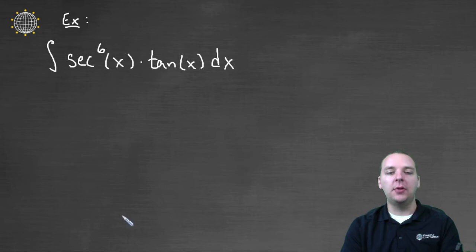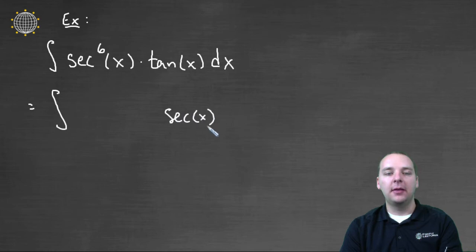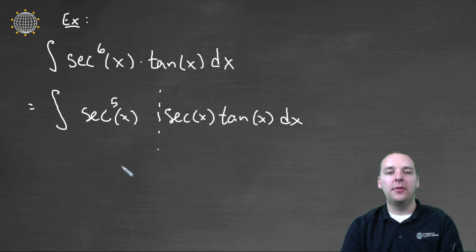The first thing that popped into my mind was to save a secant tangent. You could go the other route, but we're going to save a secant x times tangent x, pulled back towards the end of the integrand. What's left after you save a secant and save a tangent would be secant to the fifth power of x.